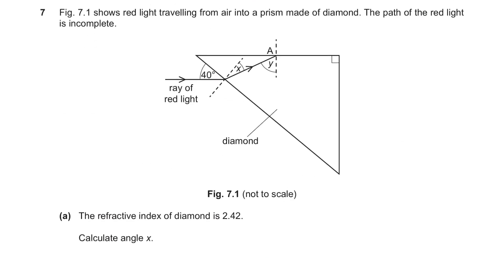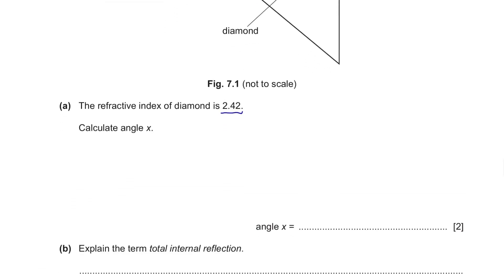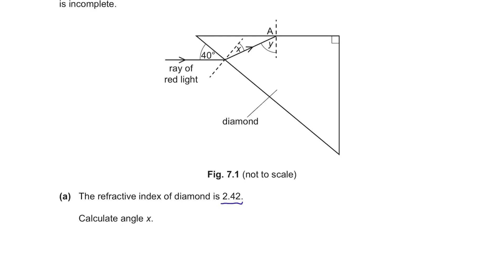Question 7. Figure 7.1 shows red light traveling from air into a prism made of diamonds. The path of the red light is incomplete. Part A: The refractive index of diamonds is 2.42. Calculate angle x. The formula related to refractive index n is: n equals sine i over sine r, where sine i is the sine of the incident angle.